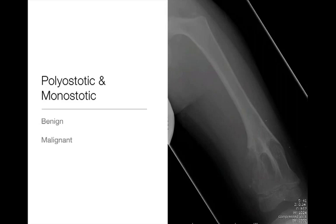We can break these down into whether they're benign or malignant. By far and away, the most common things you're going to see on a day-to-day basis are malignant polyostatic things, and they're usually going to be mets or multiple myeloma. You see these day in, day out — they're super common, by far the most common tumor you're likely to encounter in practice. Many of the benign polyostatic things we'll discuss are much rarer, and you may not ever run across them at all.